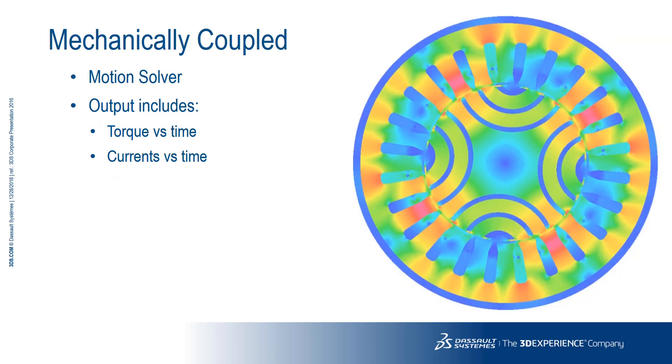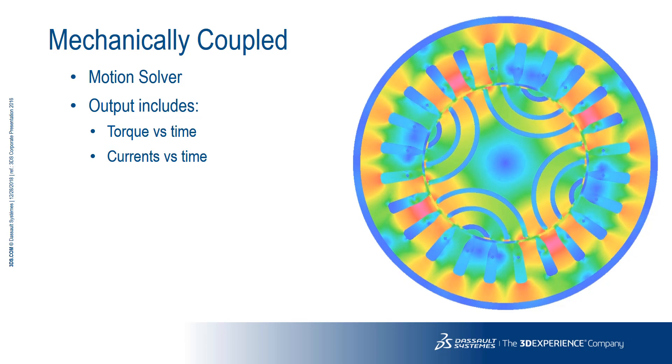The machines environment mechanically coupled analysis for synchronous machines uses the motional analysis solver module, with the movement of the rotor being calculated using the mechanical coupling equations. The default output from this analysis is a plot of the torque versus time and current versus time curves.